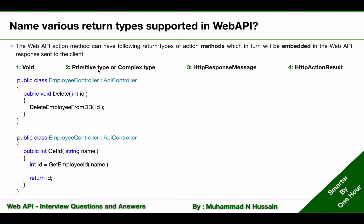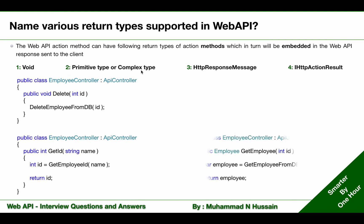In the same way, we can return a complex type such as an object. In the next example, I have created an action method GetEmployeeByID in the Employee controller. Based on the ID, it gets the employee from the database and returns that employee object back to the client.